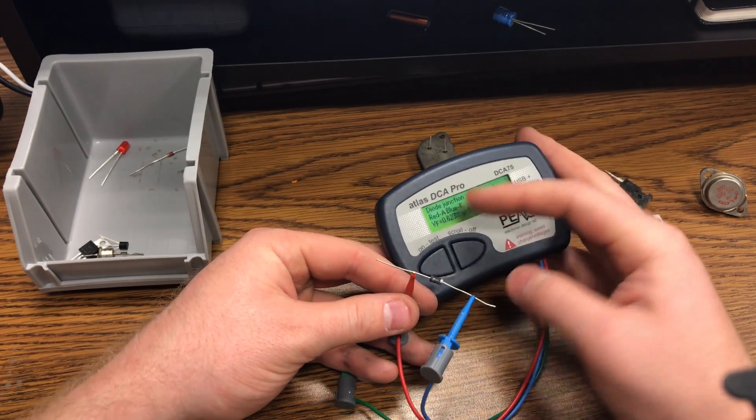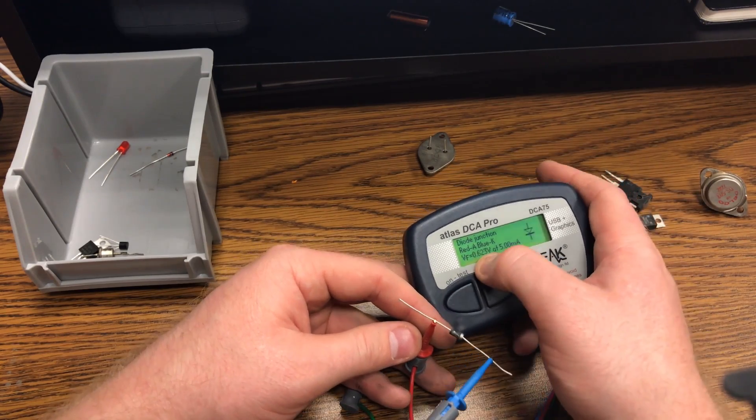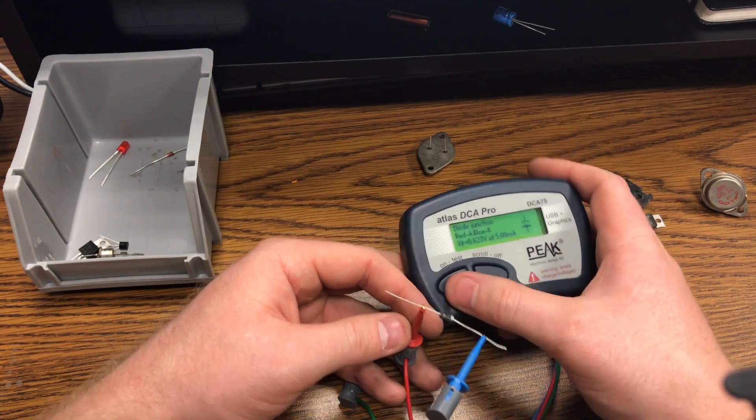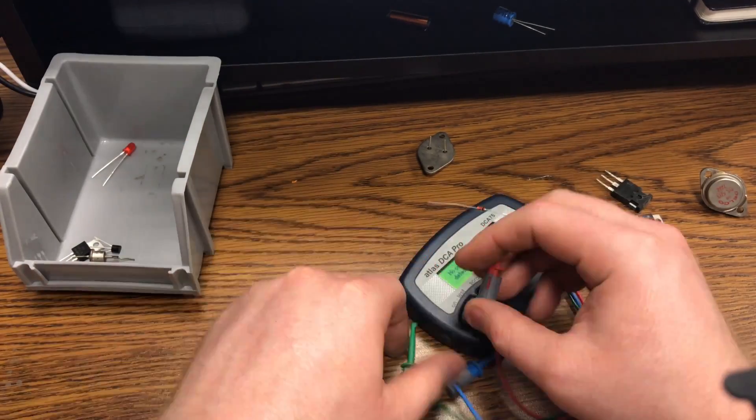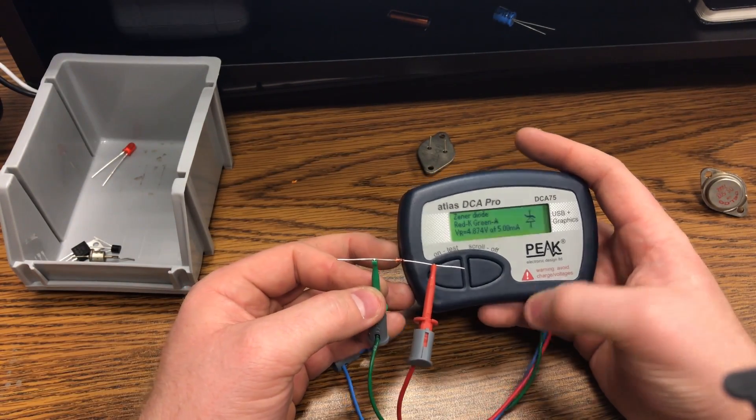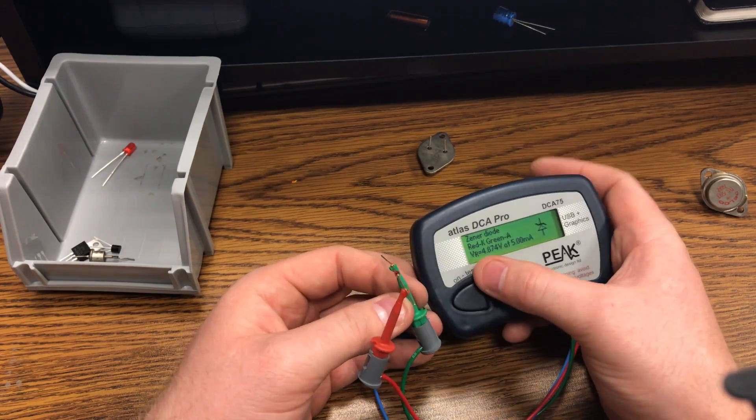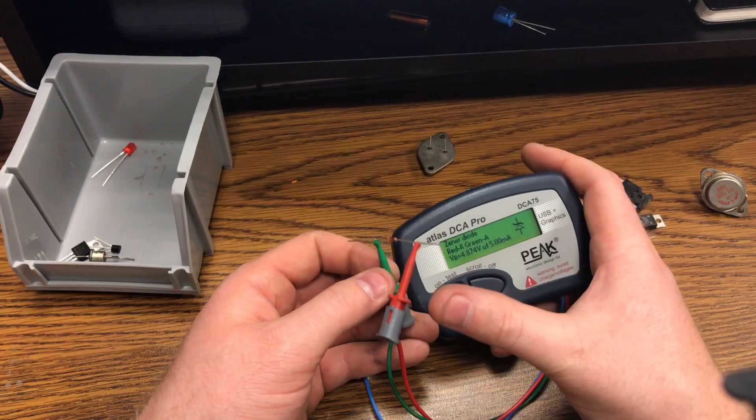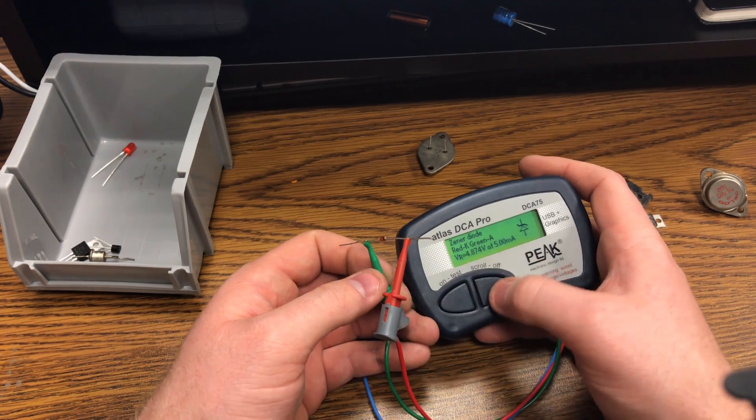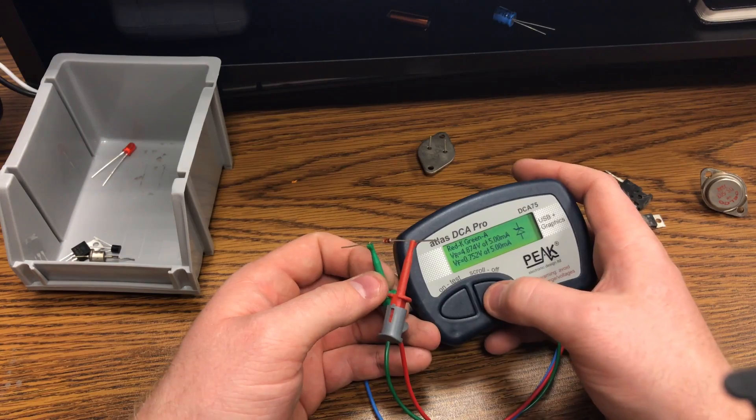Diode junction, red anode, blue cathode, the forward voltage drop, and that's pretty much all it gives you for diodes. So red cathode, green the anode, and the reverse voltage, which is what's important with the zener, is 4.874, and then you hit the scroll button, you'll get the forward voltage.